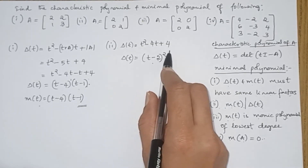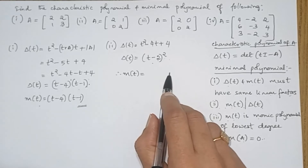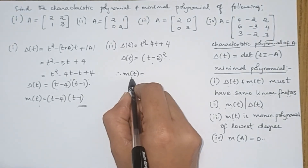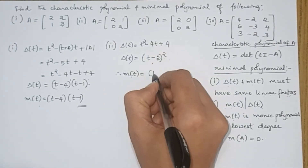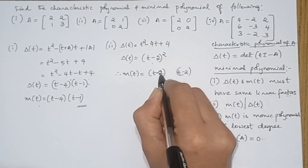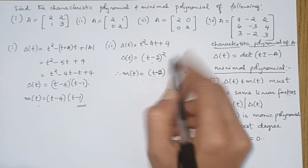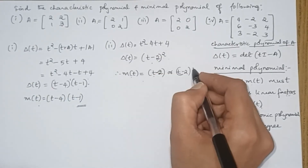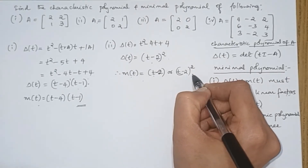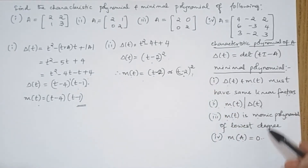The characteristic polynomial does not contain only linear factors — there is a quadratic factor as well. Therefore, when finding M(T), there are two possibilities. Delta(T) and M(T) must have the same linear factors, so the linear factor (T minus 2) must appear in any possibility. One possibility is (T minus 2), and another is (T minus 2)². Either (T minus 2) or (T minus 2)² — these are the two possibilities for M(T).